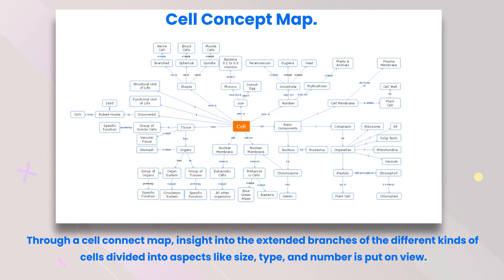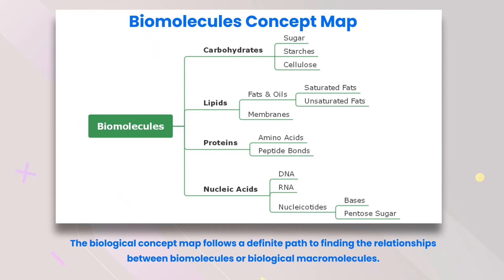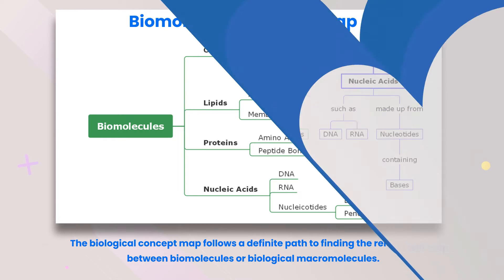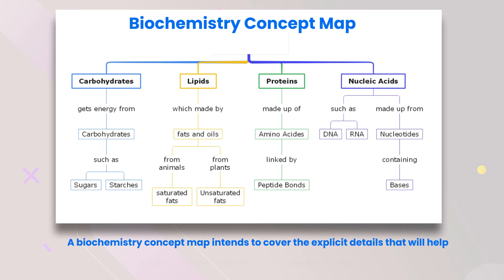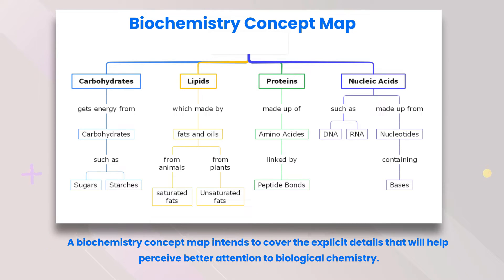Cell concept map: through a cell concept map, insight into the extended branches of the different kinds of cells, divided into aspects like size, type, and number, is put on view. Biological concept map: the biological concept map follows a definite path to finding the relationships between biomolecules or biological macromolecules.